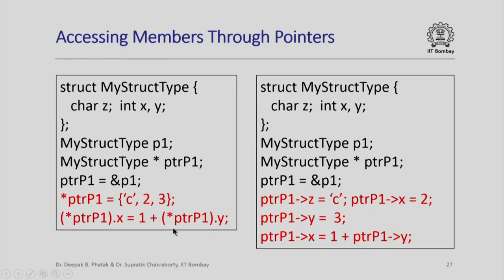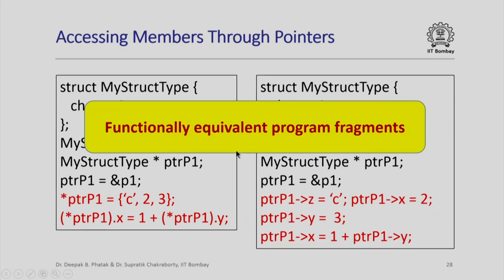Here is our original program in which I had initialized star pointer p1 to {c, 2, 3} and then added 1 to star pointer p1 dot y and used it to update star pointer p1 dot x. Here is a completely equivalent program where I have initialized the members z, x and y of p1 using the arrow operator: pointer p1 is assigned the address of p1, then pointer p1 arrow z is assigned c, pointer p1 arrow x is assigned 2, and pointer p1 arrow y is assigned 3. These two program fragments are completely functionally equivalent.